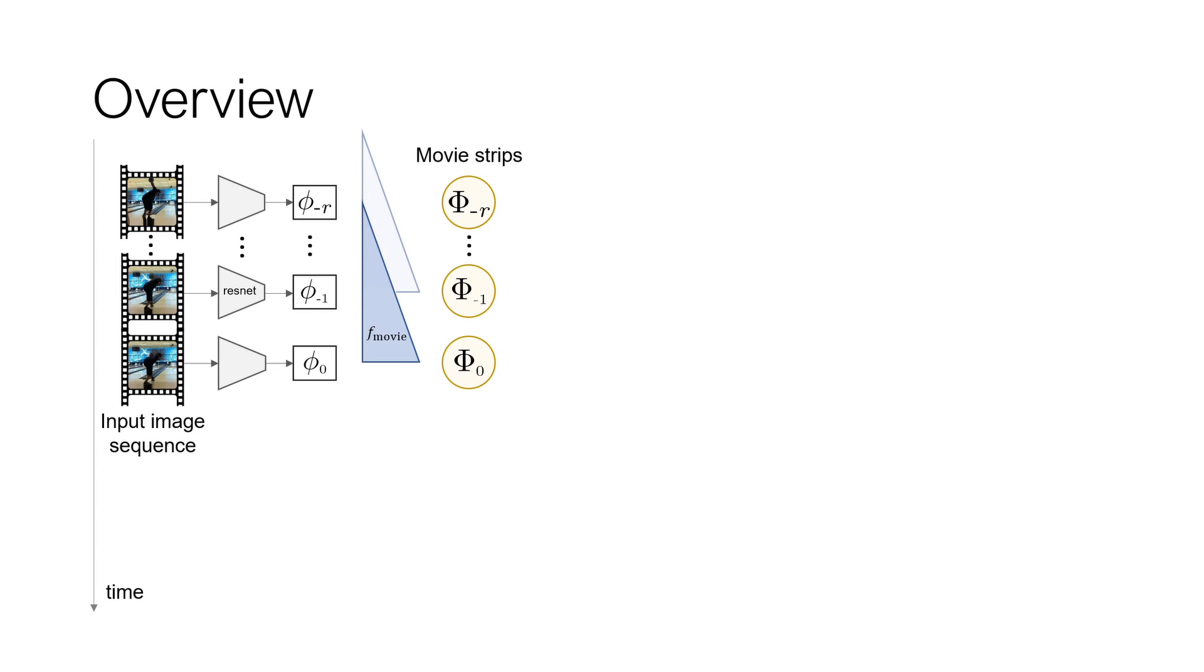Each movie strip is causal, which means that it only contains information about the frames up to the current time step in consideration. We then train a 3D regressor that predicts the parameters of a 3D mesh model from the movie strip representation. This is trained with 3D supervision when available.